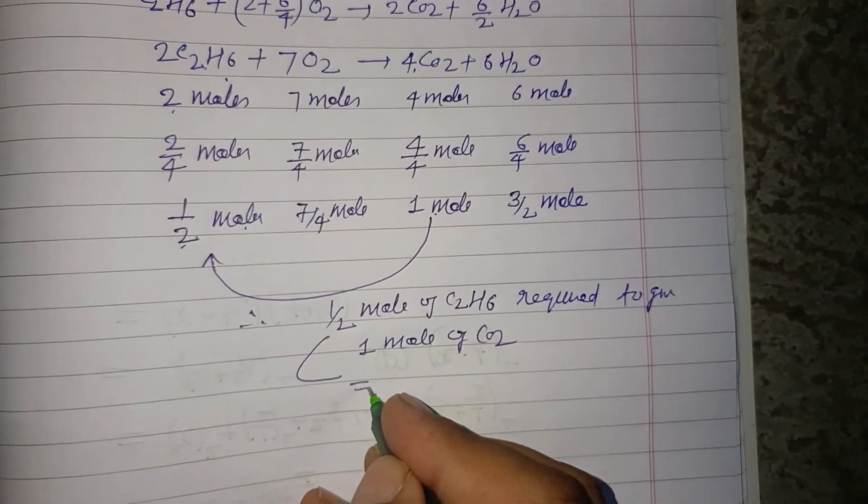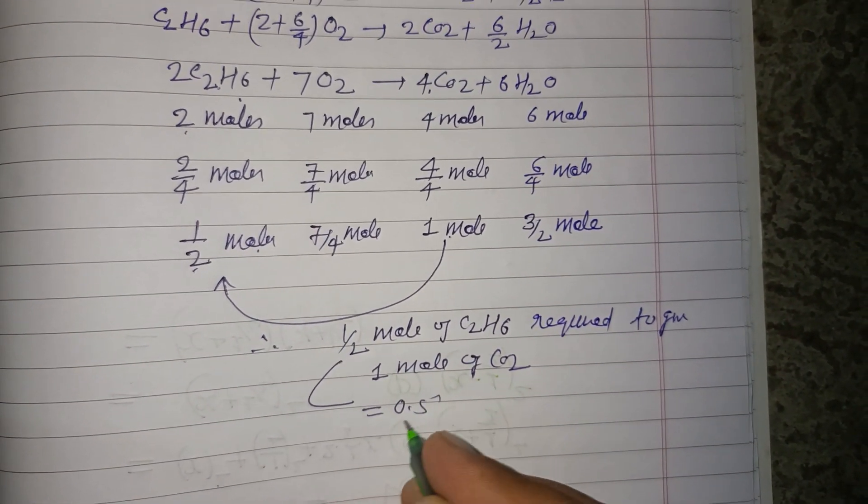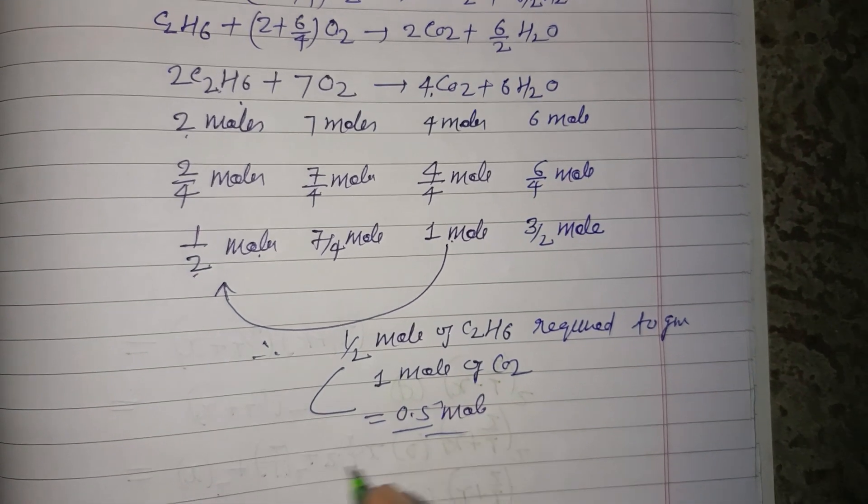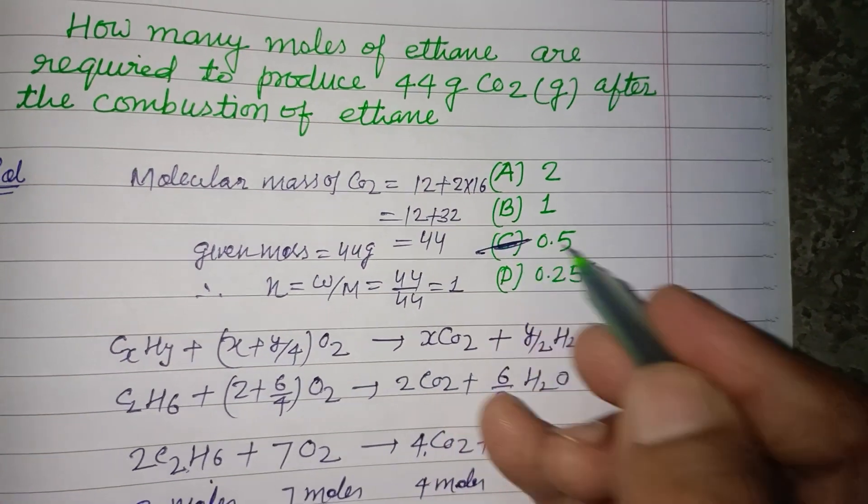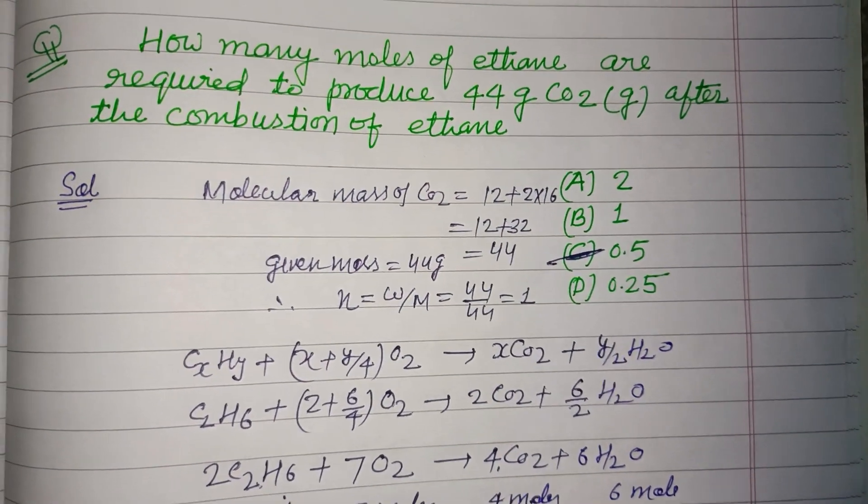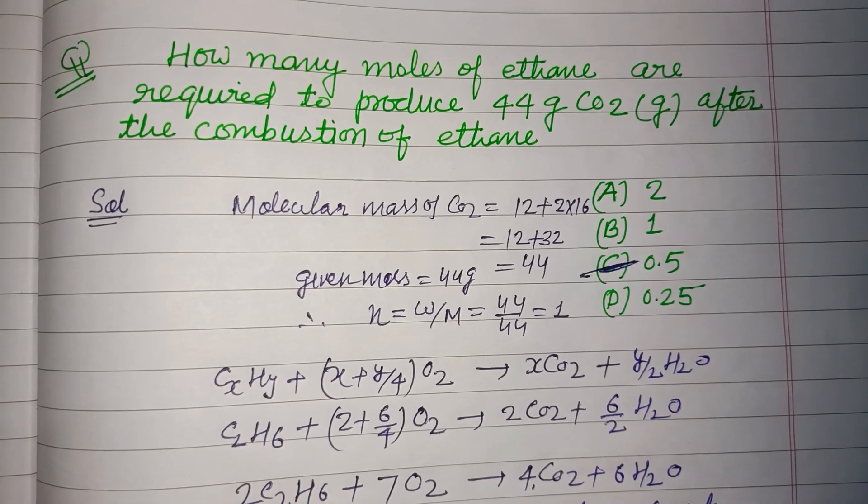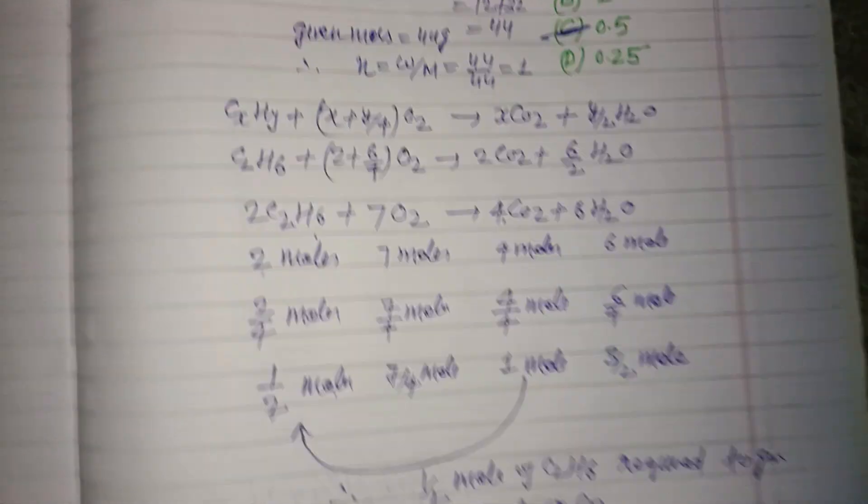So 1/2 mole, or we write it as 0.5 mole. The correct answer is 0.5 mole, which is given in option C. So option C is correct. I hope you got it. Please like the video, subscribe to the channel, thanks for watching.